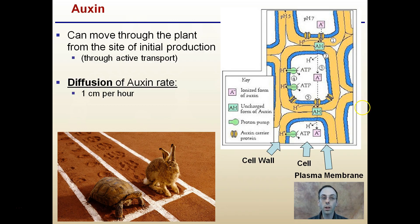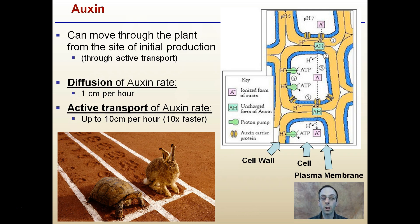Starting first, auxin can move through the plant from the site of initial production. It moves through the process of active transport. Now it can diffuse — this is a hormone that can diffuse through plant cells — but it only diffuses at about a centimeter per hour. However, when auxin is transported through active transport, it's much faster, about 10 times as fast, meaning it can move 10 centimeters per hour, and this is advantageous to the plant.